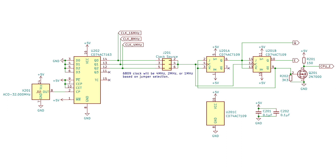This is the first version of my clock circuit. It's a little more complicated than the datasheet example, but it works essentially the same way. The main difference is that I want to support multiple clock frequencies for different 6809 speed grades, so I'm using a 32MHz oscillator that then drives a 74ACT-163 binary counter to divide the clock down to 16, 8, and 4MHz.